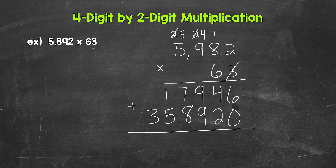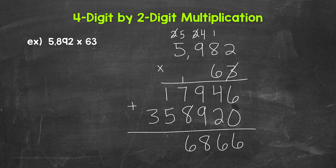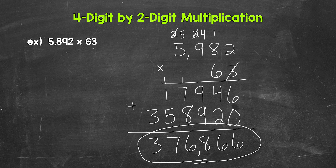And now we add these for our final answer. We'll start with the ones place: 6 plus 0 is 6. 4 plus 2 is 6. 9 plus 9 is 18 — carry the 1. 1 plus 7 is 8, plus 8 is 16 — carry the 1. Then we have 1 plus 1 is 2, plus 5 is 7. And then we end with a 3 in the hundred-thousands place. We can put our comma in, and this is our final answer: 376,866.